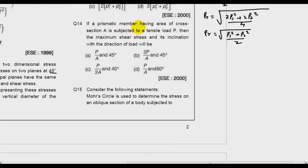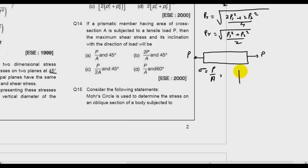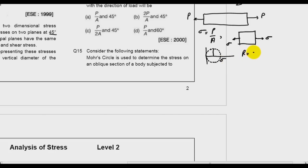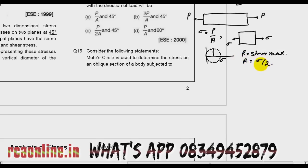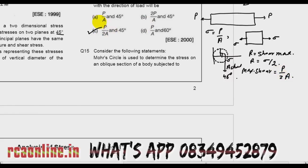Question number 14: If a prismatic member having area of cross-section A is subjected to a tensile load P, then the maximum shear stress and its inclination — the stress is P/A. Drawing the Mohr circle, the maximum shear stress equals the radius of the Mohr circle, which is sigma/2 = P/(2A). The angle on the Mohr circle is 90°, so the actual angle is 45°. Therefore the maximum shear stress is P/(2A) and the angle is 45°, so C is the answer.